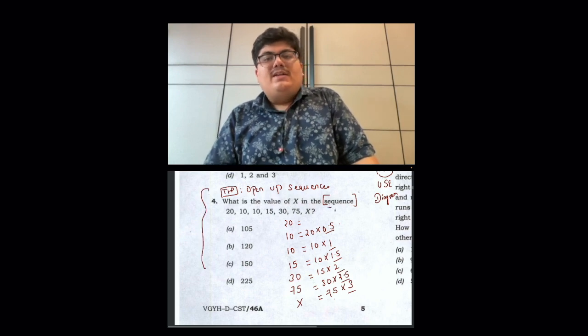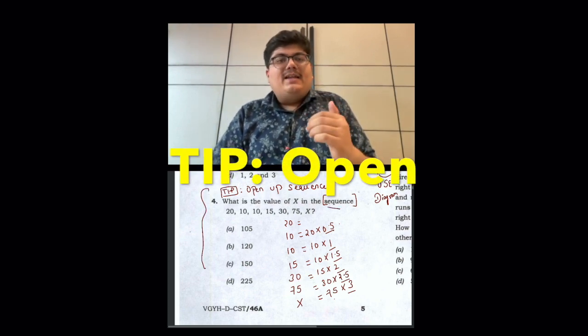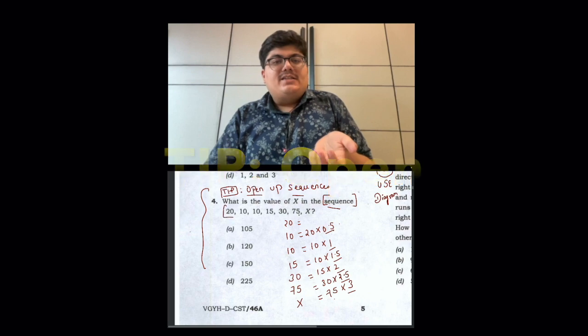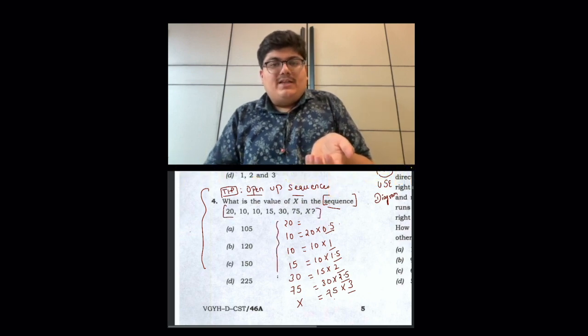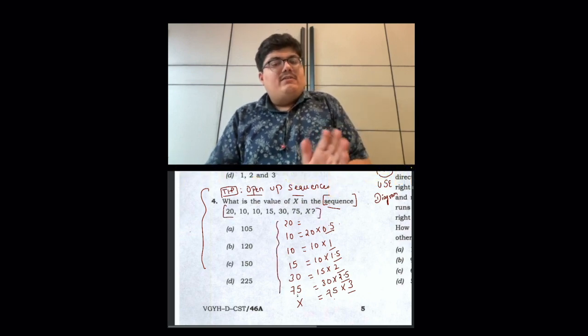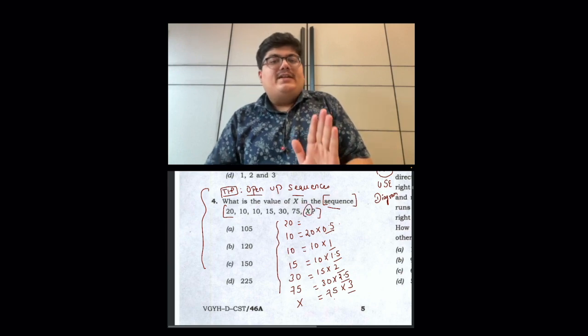The first question is about the sequence. The tip here is, if there is a question of any sequence, then open it first. If we open it vertically: 20, 10, 10, 15, 30, 75, x. x is the required term.